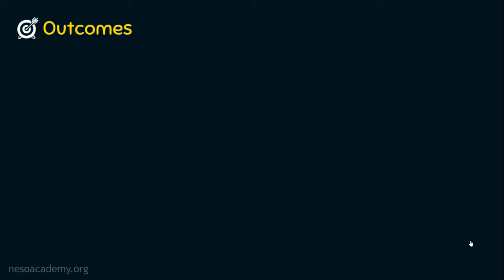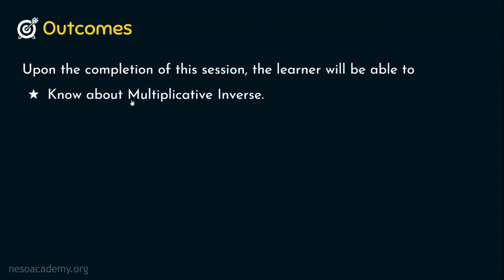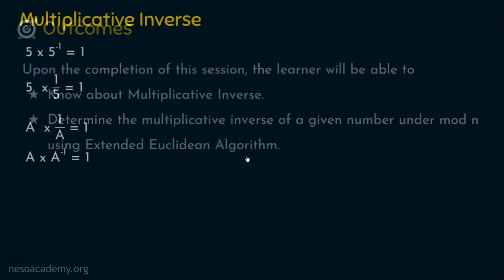As usual, let's start the session with the outcomes. Upon completion of this session, the learner will be able to: Outcome number 1, know about multiplicative inverse; and outcome number 2, determine the multiplicative inverse of a given number under mod n using extended Euclidean algorithm.